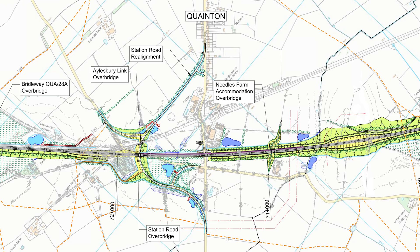We now come to the more complex section at Quainton, with the realignment of Station Road. As you can see here, it bends off to the left. On the northern section it joins up with the original Station Road, as it does on the south side as well. We'll also see there are a couple of overbridges — Station Road Overbridge and the Aylesbury Link Overbridge — both combined into one structure.